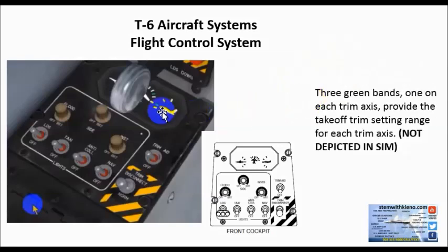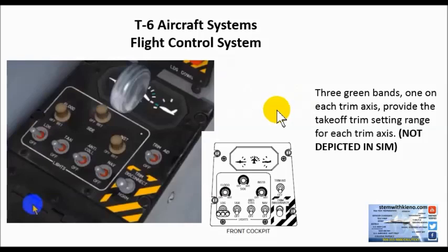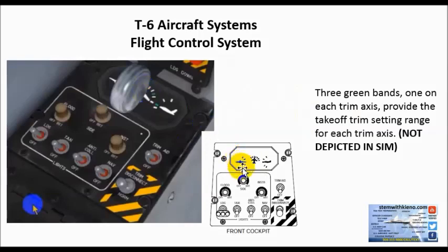It's not depicted in our simulator, but in the actual aircraft, three green bands — one on each trim axis — provide the takeoff trim setting range for each trim axis. So instead of one band, you would see three bands in the actual aircraft. The landing gear lever in the simulator is blocking the view, so I provided a pictorial here for the front cockpit.